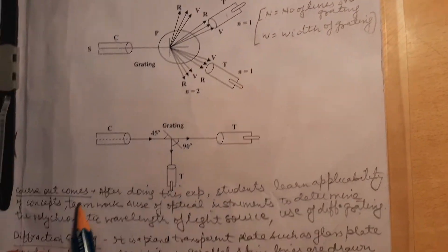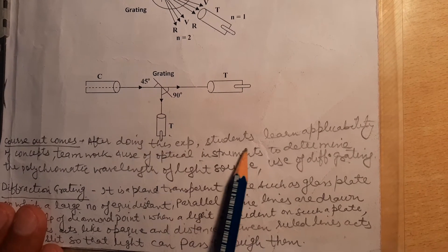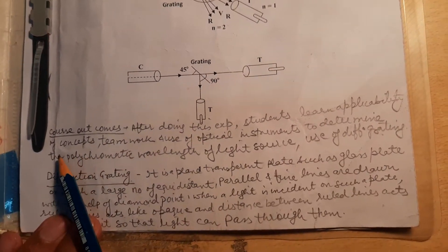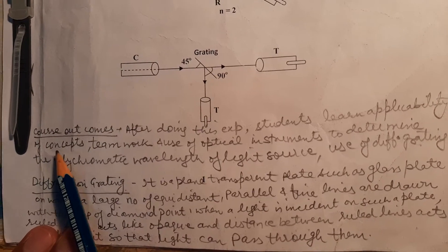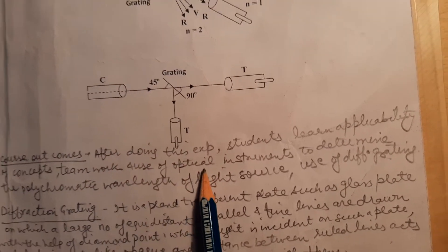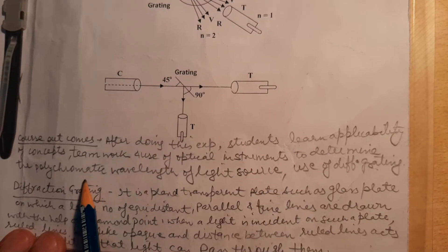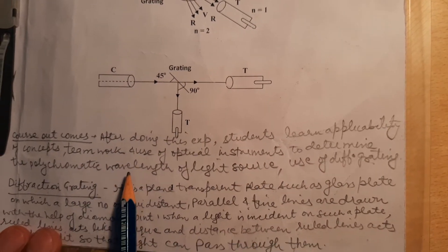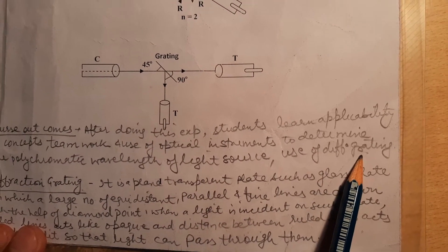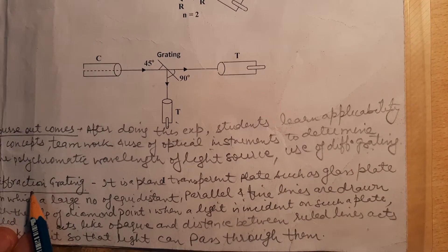The outcome of this experiment is: after doing this practical, students learn applicability of the concepts, teamwork, use of optical instruments to determine the polychromatic wavelength of the light source, and the use of diffraction grating.